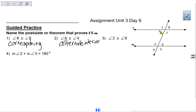Next one, we're looking at angle 2 and angle 6 being congruent. Why are they congruent? These are alternate interior angles.